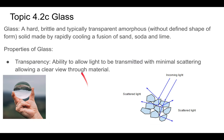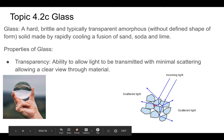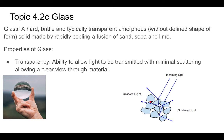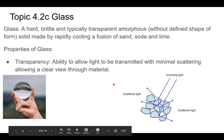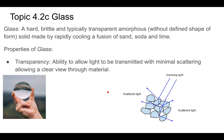Now let's talk about properties of glass, starting with transparency — the ability to let light transmit with minimal scattering, allowing a clear view through the material. In crystalline substances there are planes between the crystal grains which scatter incoming light. Because glass is amorphous, it doesn't have those planes, so it scatters less light and is therefore transparent.